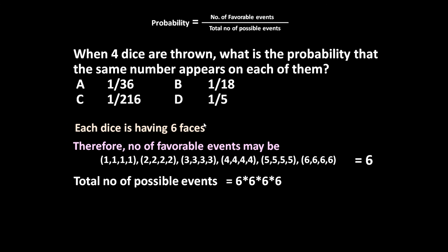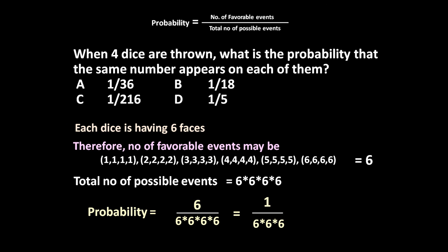The total number of possible events, since four dice are thrown and each has six faces, is six into six into six into six. So probability equals six divided by six to the power four, which equals one divided by six into six into six, equal to one upon two hundred and sixteen. The answer is one by 216.